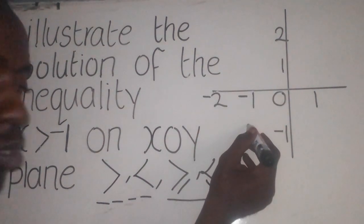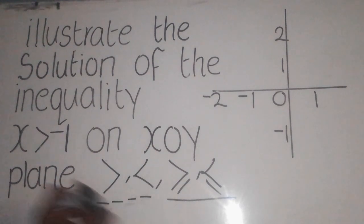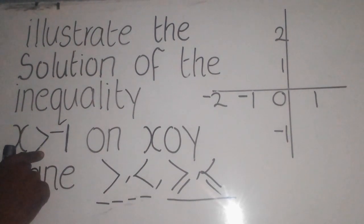Now, what type of line are we supposed to draw? We are supposed to draw a dotted line. Why so? Because we have said greater than.